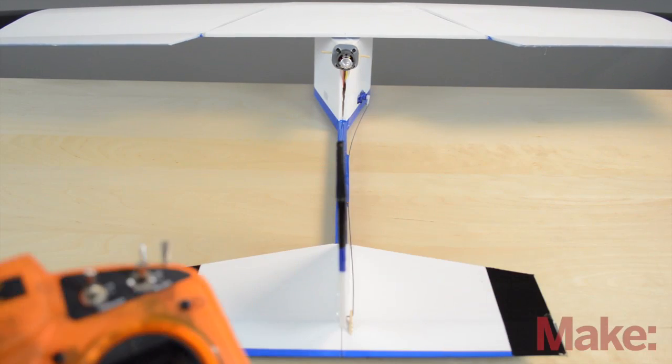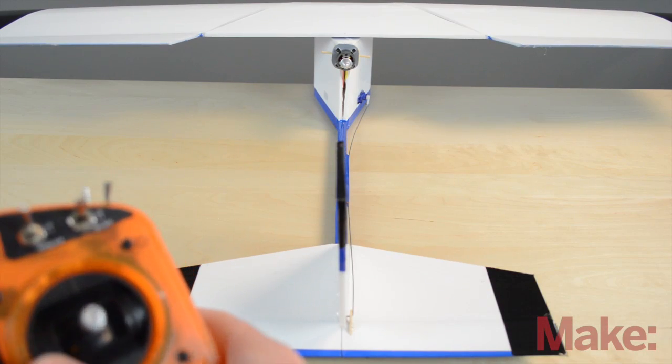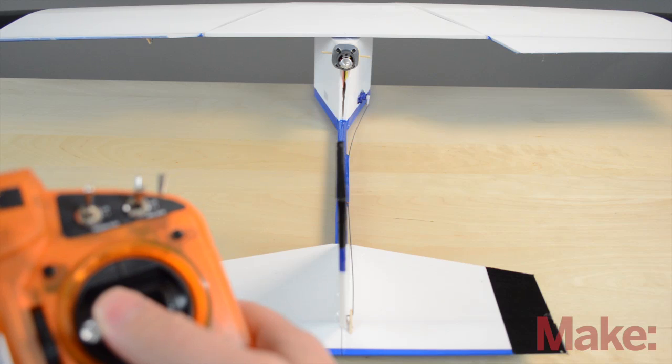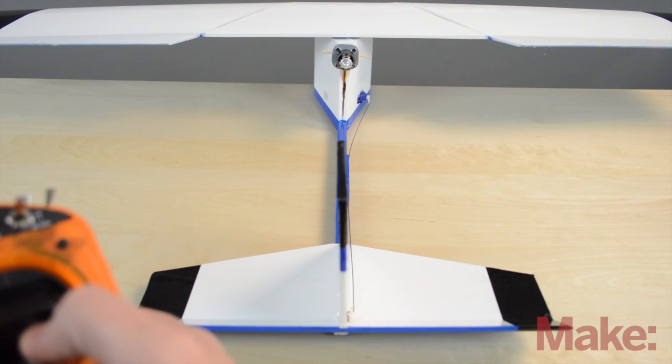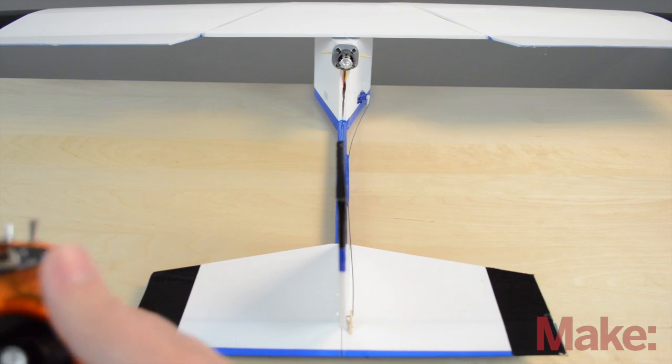So really quickly, let's check our directions again. We go to the left aileron, the left aileron comes up. Go to the right, the right aileron comes up. You pull up and the elevator comes up.